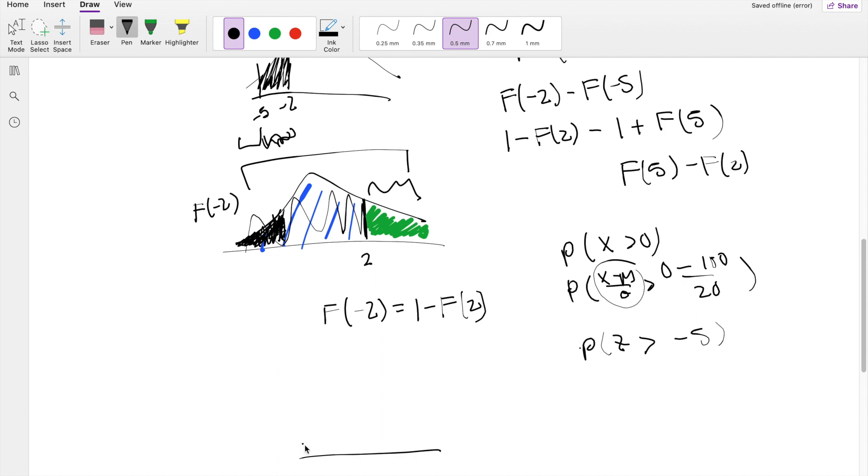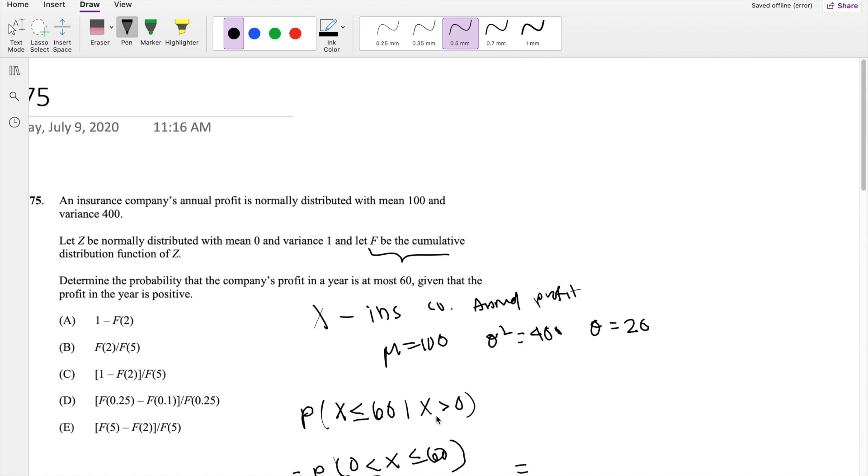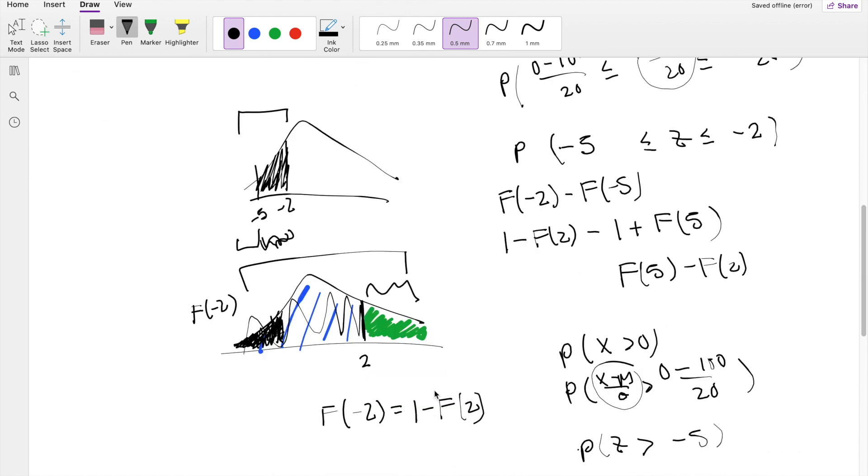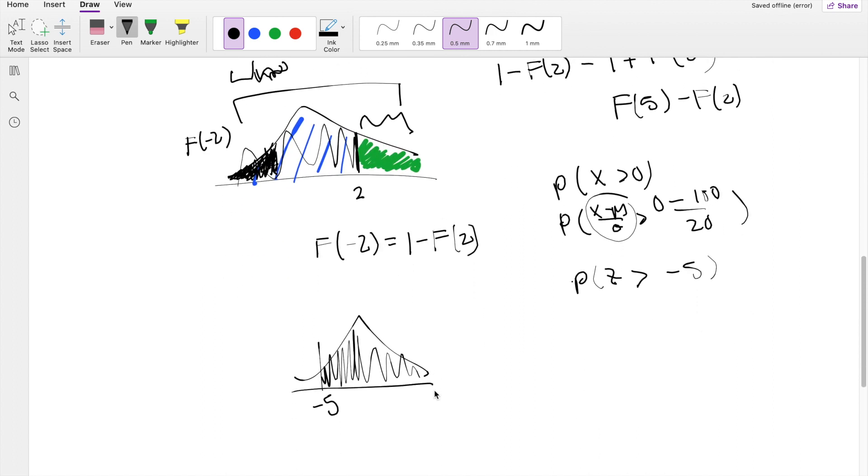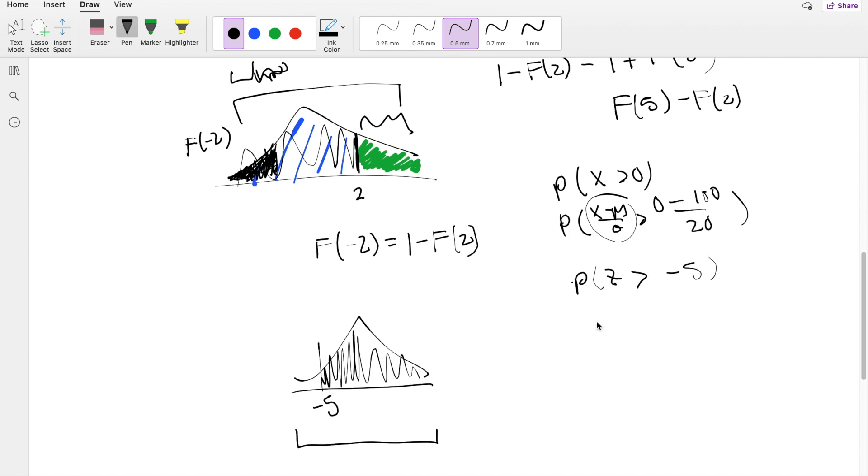So if Z is greater than negative 5, let's say this is negative 5. We're looking for this area right here. But because we know F is a CDF, we have to put it in terms of CDF. So that means this area is going to be probability of 1, 1 minus the probability here, whatever this little chunk is, which we know is the CDF of F of negative 5. CDF is the cumulative distribution going from this way. So F of negative 5 is just this area right here.